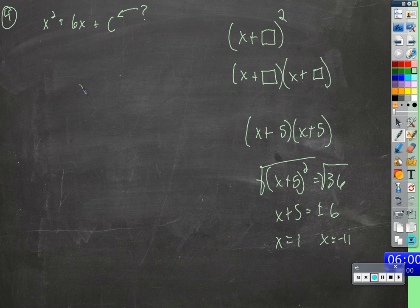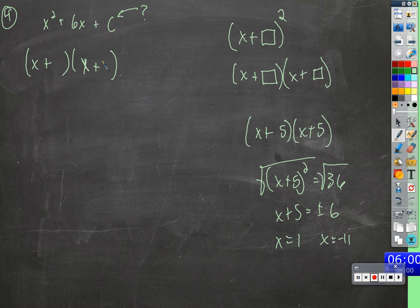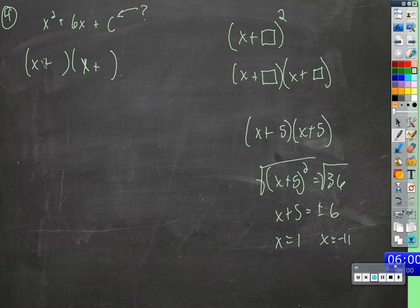So how do we figure out what that number is? Well, to remind you, what we're looking for is two things to go here and here, but those two things conveniently are exactly the same — the exact same number. So remember that if this is going to factor into these two factors, then they need to be able to multiply together to get this expression.